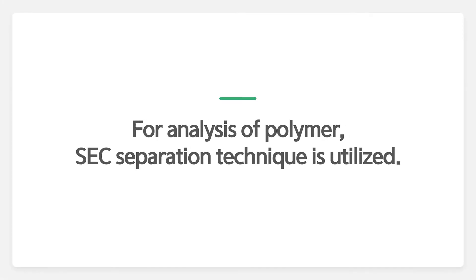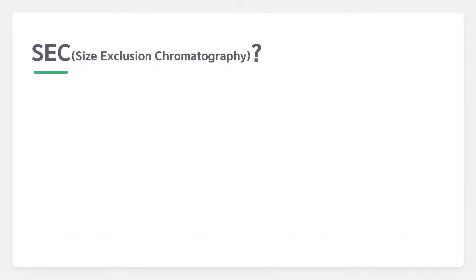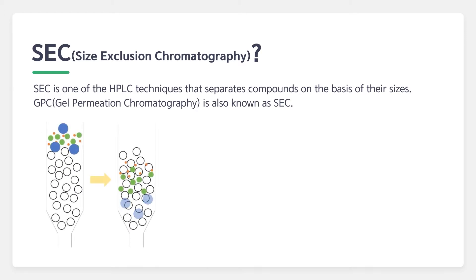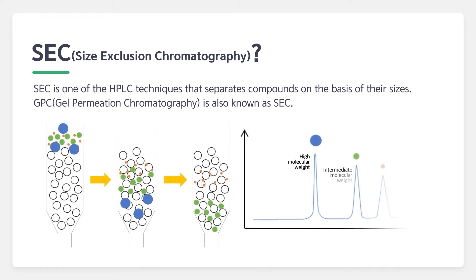For analysis of polymers, SEC separation technique is commonly used. What is SEC? Size exclusion chromatography is one of the HPLC techniques that separates compounds on the basis of their sizes. GPC, gel permeation chromatography, is also known as SEC. When the sample dissolves in solvent and goes into the column packed with porous beads, smaller molecules permeate the pores of the beads.